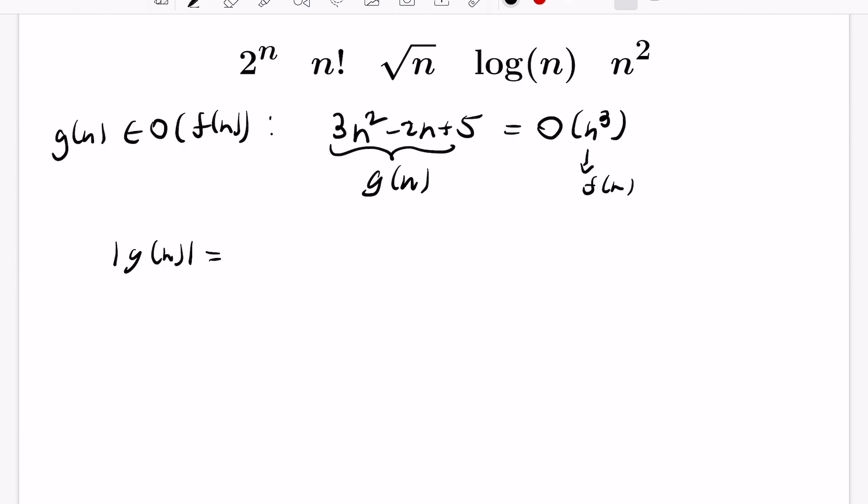So what we notice about the absolute value of g of n is the absolute value of 3n squared minus 2n plus 5. And we want to bound this by a constant times big O times n cubed itself. Now by the triangle inequality, this is less than or equal to 3 times the absolute value of n squared plus 2 times the absolute value of n plus 5 itself, which is 5 times 1. And we can bound every single one of these terms by n cubed, which is going to be true when n is at least 1. So this is bounded above by 3n cubed plus 2n cubed plus 5n cubed, which is a really huge upper bound, but it still establishes exactly the thing we want, which gives us a 10n cubed.